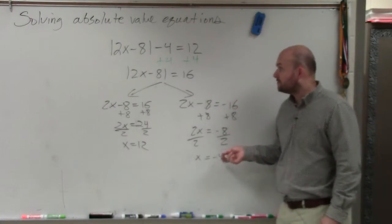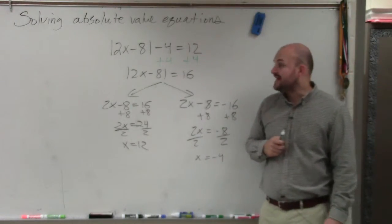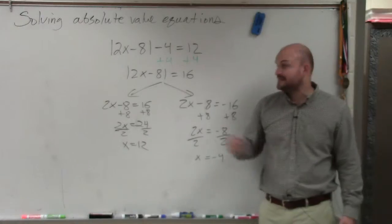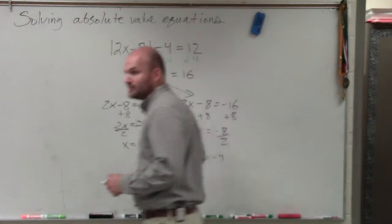Let's try negative 4. 2 times negative 4 is negative 8. Negative 8 minus 8 is negative 16. Absolute value of negative 16 is 16. So both of our solutions work.